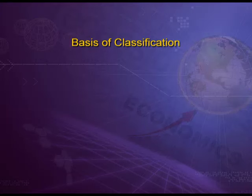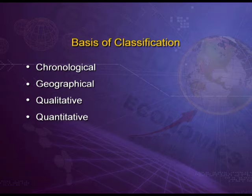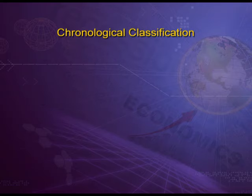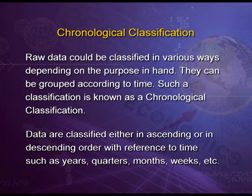Now, what are the bases of classification — or types of classification? They are broadly divided into four categories: chronological, geographical, qualitative, and quantitative. The first is chronological classification — raw data can be grouped according to time. Such classification is known as chronological classification. Data are classified either in ascending or descending order with reference to time, such as years, quarters, months, or weeks.